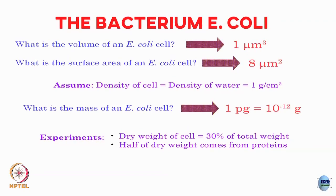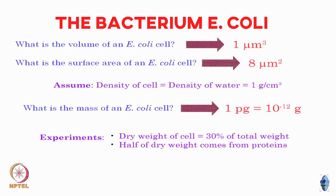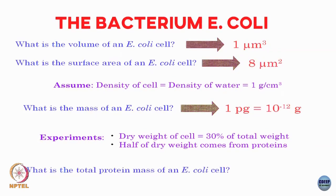Experiment tells us that the dry weight of the cell is about 30 percent of the total weight — that is everything: proteins, DNA, all macromolecules inside the cell — and the rest is water. Further experiments tell us that around half of this dry weight comes from proteins. So 15 percent of the total weight comes from proteins, giving a total protein mass of around 0.15 picograms.